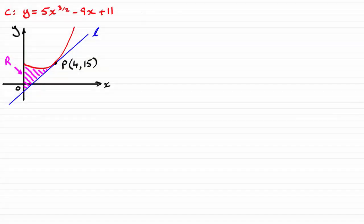For this question I've just sketched what we're given, and as you can see we're asked to find this area that I've shaded here, which is called R, between the curve C and the y-axis and the tangent to the curve at the point P with coordinates.